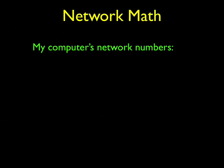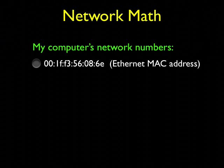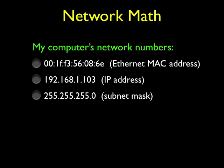Let's look at the network math that underlies these devices. My own computer has a bunch of network numbers, such as 001FF356086E, which is my computer's Ethernet MAC address — that means Media Access Control. All computers connected to the Internet have an IP address in dotted decimal notation, such as 192.168.1.103. The first part of the address is the network address, 192.168.1, and the 103 is my device address.